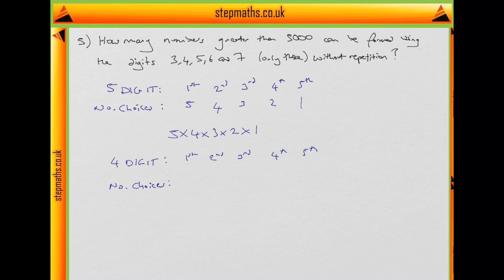So how many do we have for the first? Well, if we pick a 3, we're going to have 3,000 or something, so that's going to be less than 5,000. If we pick a 4, we're going to have 4,000 or something. If we pick a 5, we can have something larger. So we can have a 5 or a 6 or a 7. So that's 3 choices.